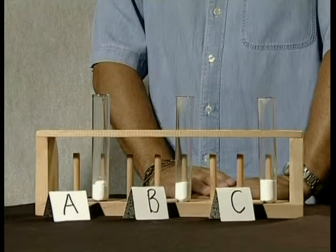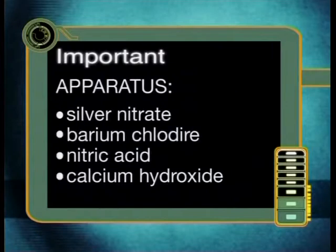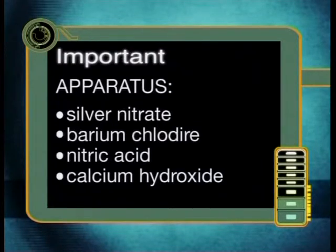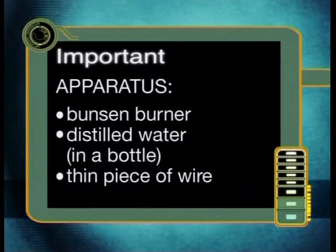Notice that all three of the salts are white. We have also been given a range of substances and other tools to assist us in our investigation to determine the cations and anions of these salts. We will use silver nitrate, barium chloride, nitric acid and calcium hydroxide to identify these salts. We have access to distilled water, a Bunsen burner and a thin piece of wire for flame tests. We have also been given some clues about these three salts to help us identify them. Because there are thousands of salts, these clues will be extremely helpful, so I suggest that you write them down.